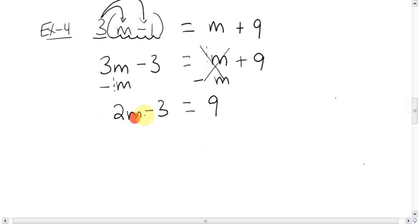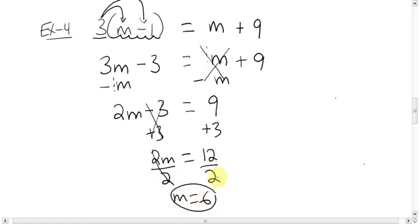Two things bugging the letter. You know what to do. Get rid of the adding subtracting first. Let's add 3. Same to the other side. The 3's go away. We're left with 2m here. Equals 9 plus 3, which is 12. The 2 is multiplying the m. Get rid of it by dividing. Same to the other side. M equals 6. Done.